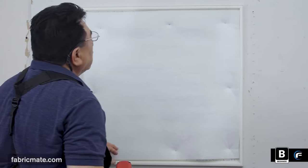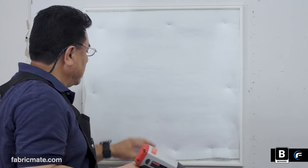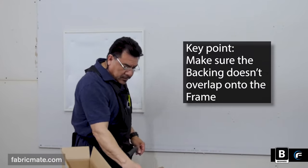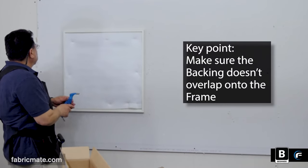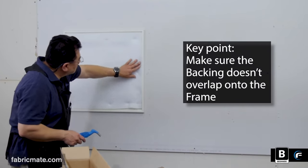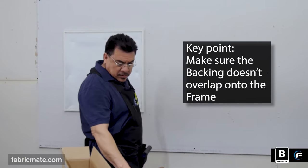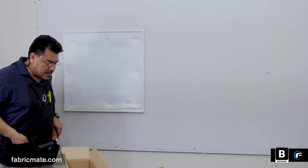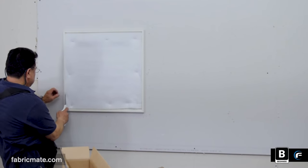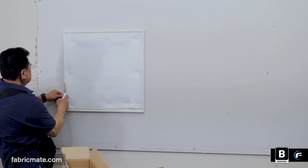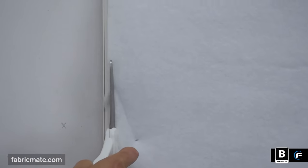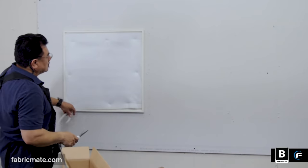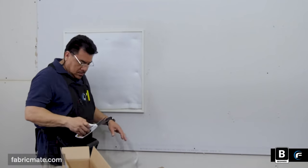Now you're seeing the backing going in, insulation, core. It's called a number of things out there. Key here is to make sure that you don't have the backing overlapping the frame, meaning you don't want any of the backing to be possibly in between the mounting frame or the fabric, or you'll see that irregularity there.